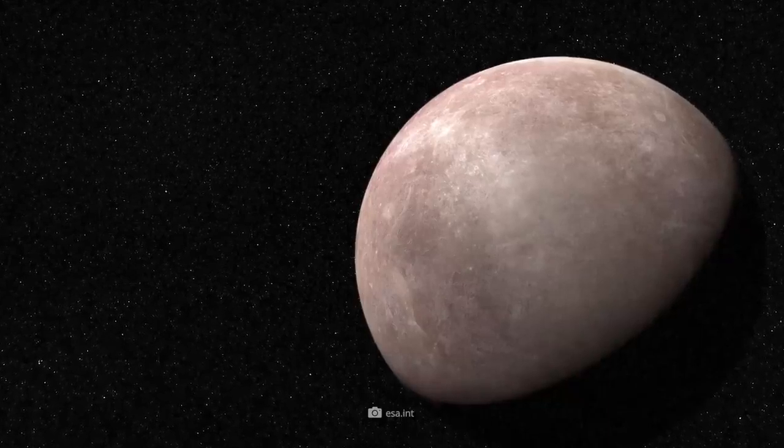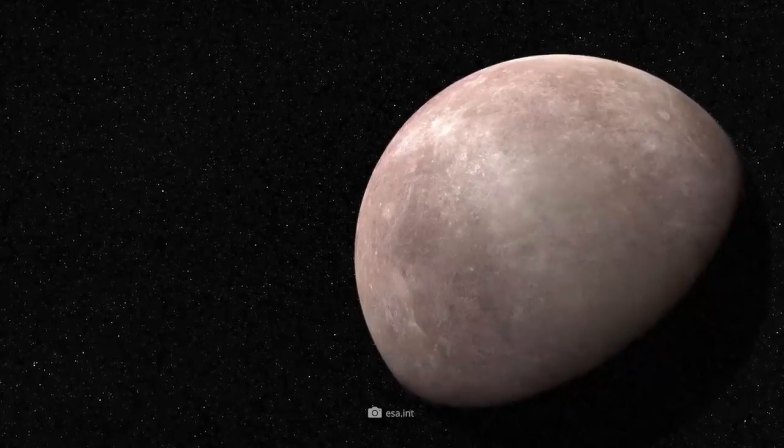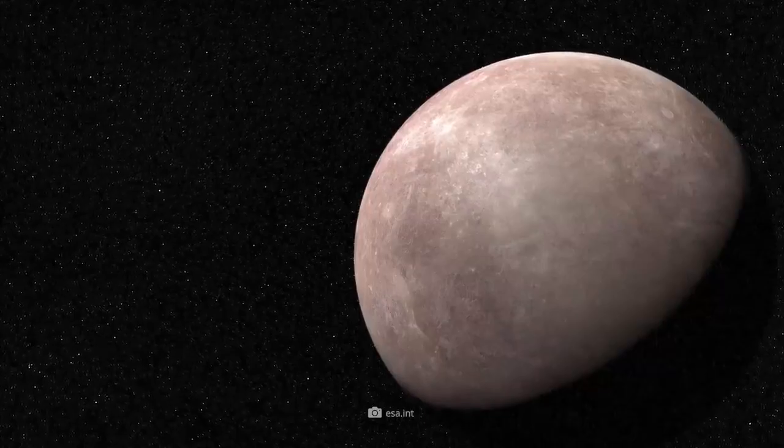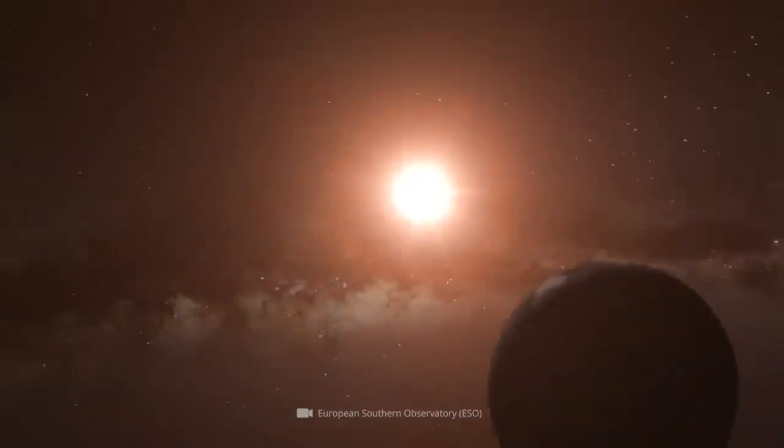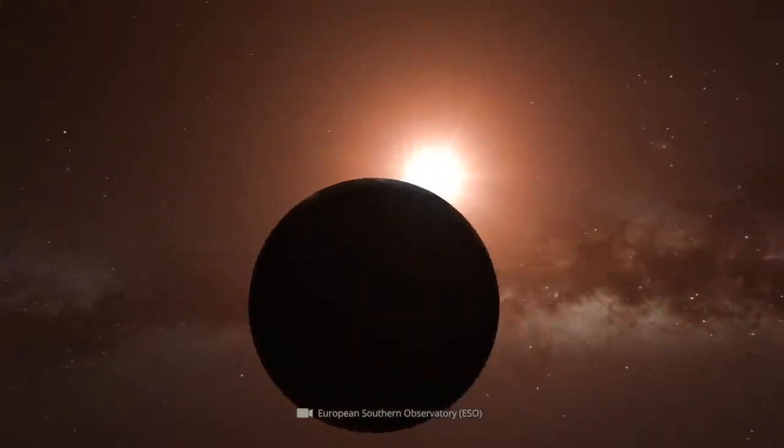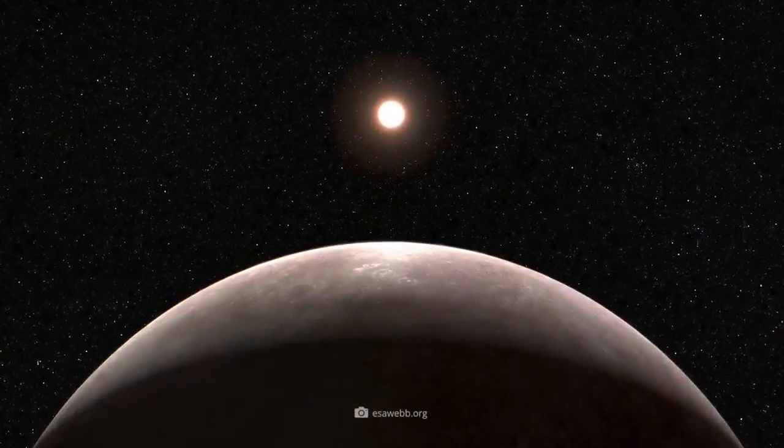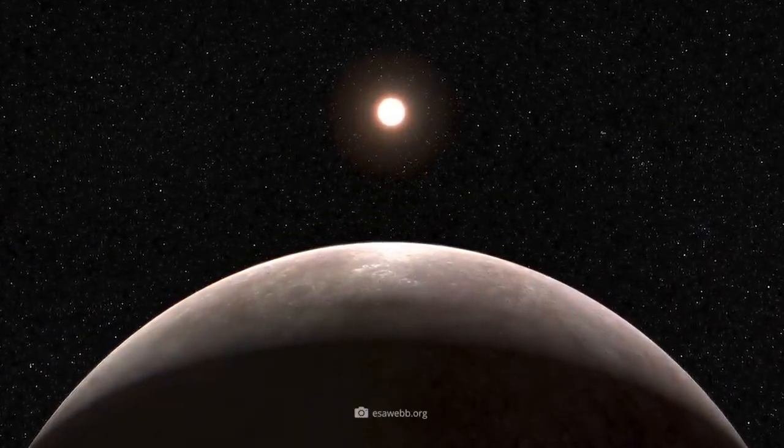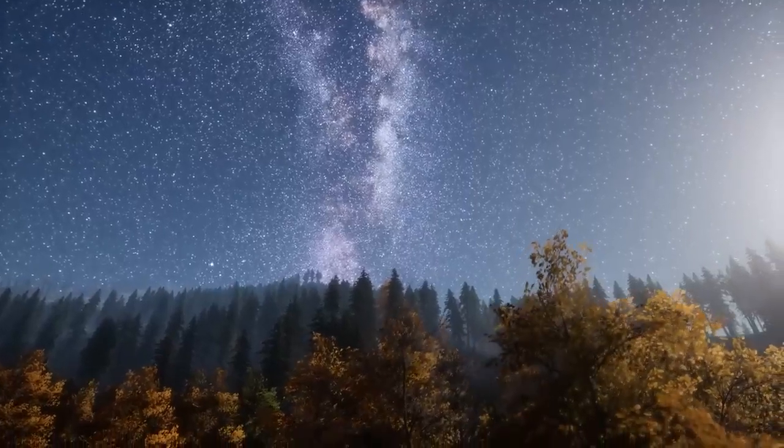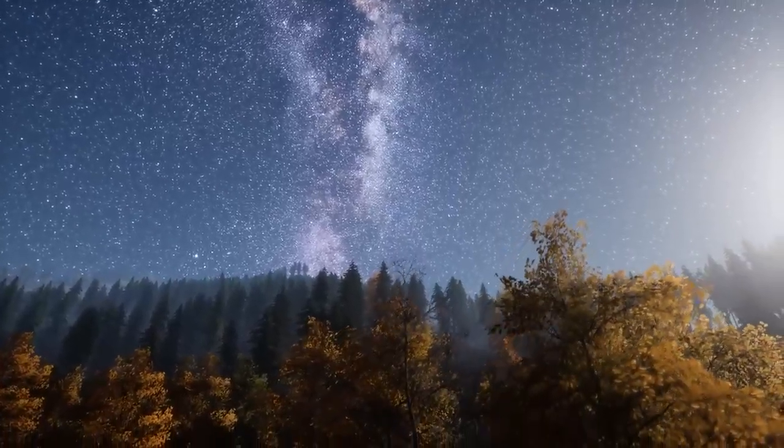The first planet analyzed in this way was LHS-475b, a rocky, Earth-sized exoplanet orbiting a red dwarf star about 41 light-years away in the constellation Octens. The planet is much closer to its star than Earth is to it, and a year lasts only two days on LHS-475b.